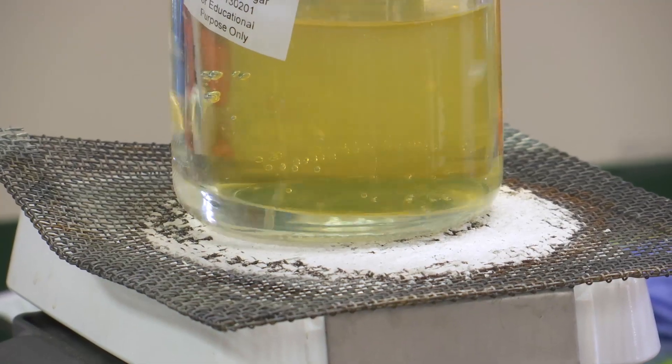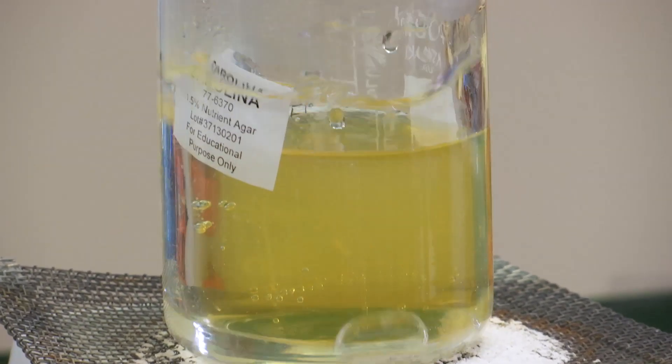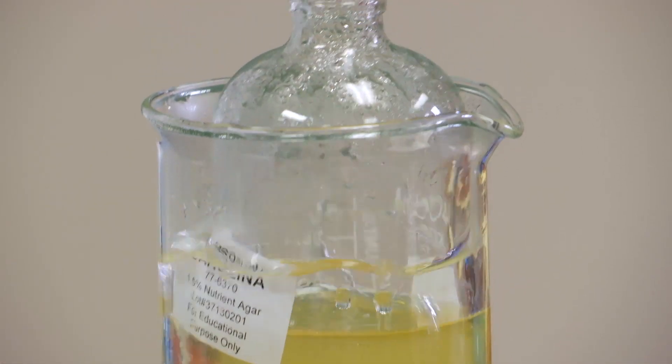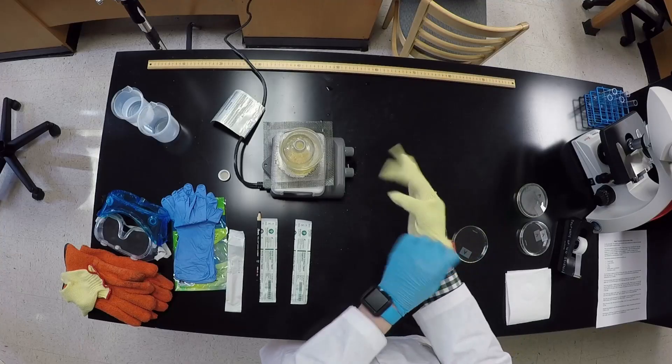Heat some boiling water up in an appropriate container and place the agar bottle in the glass with the lid off. Be careful not to submerge the bottle or get water inside of it. Once fully liquified, carefully take the bottle out with a glove. It will be hot.